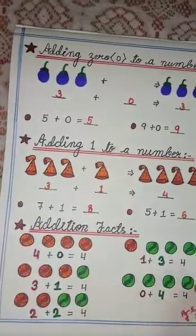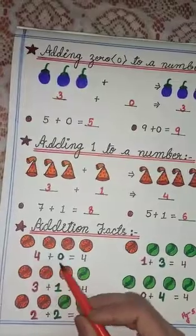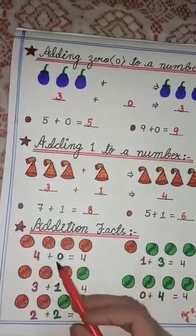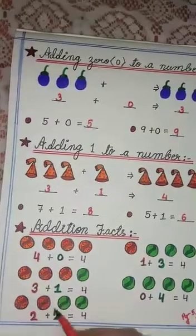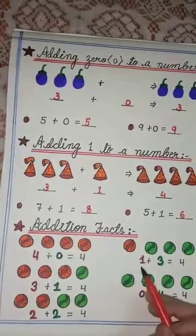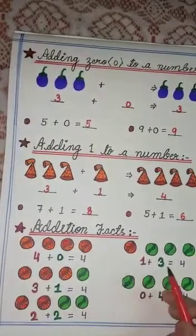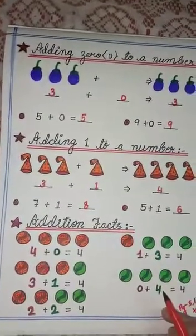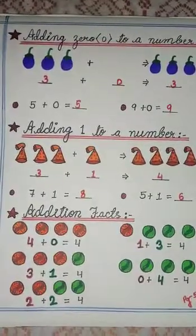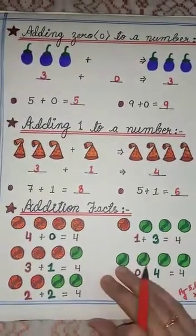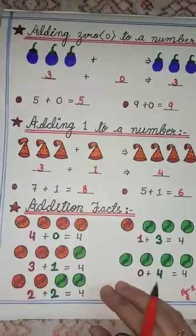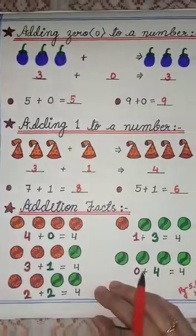So number 4 we can get by adding these numbers: like 4 and 0, 3 and 1, 2 and 2, then opposite 1 and 3 and 0 and 4. Children, this was in your book in page number 7. So this was easy, I hope you have understood this.